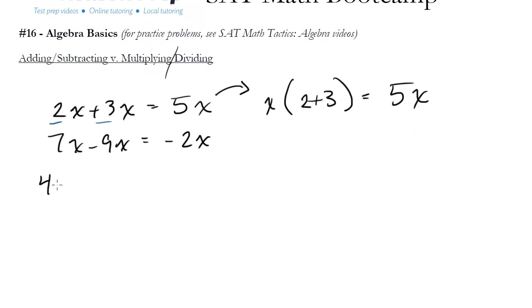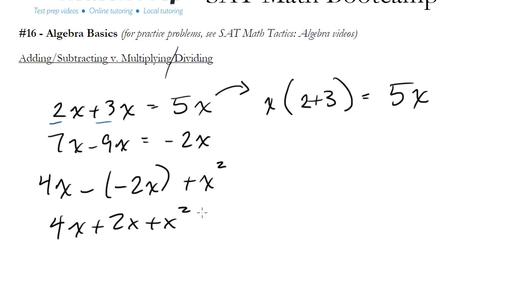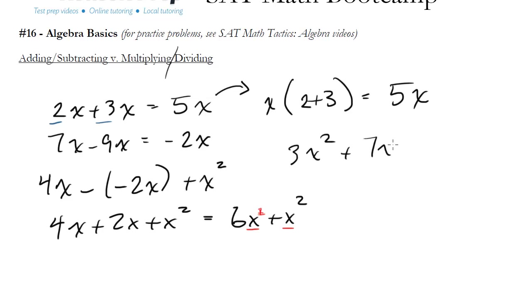What about something like 4x minus negative 2x plus x squared? I can go ahead and distribute my negative, I'll get 4x plus 2x plus x squared, and that's the same thing as 6x plus x squared. But notice I have to stop because I can only add these terms when my x's have the same exponent — here it's a 1, just not written, and this is a 2, so I can't combine these. If you had something like 3x squared plus 7x squared, they're both x squared, so I'd combine those to 10x squared. Know that when you add or subtract, they have to have the same exponent in order for you to combine them.